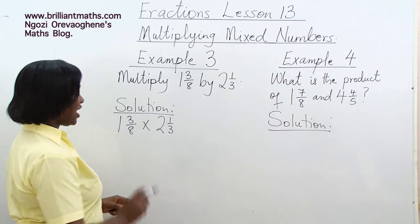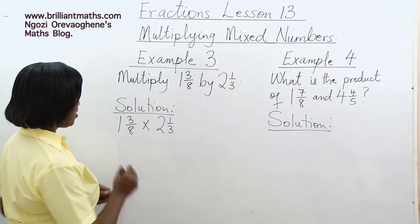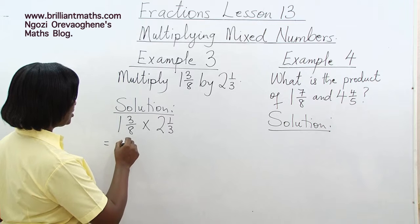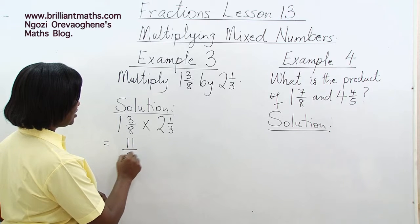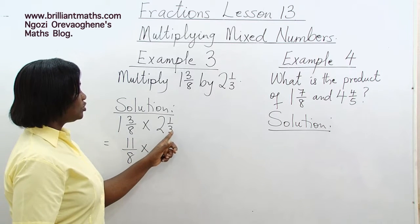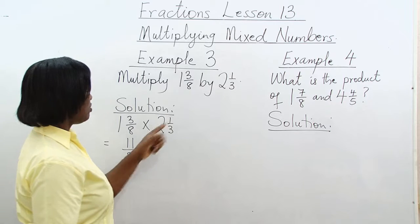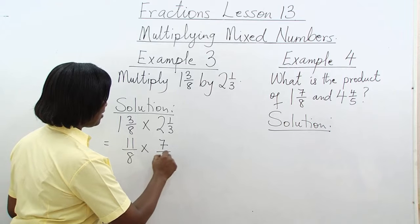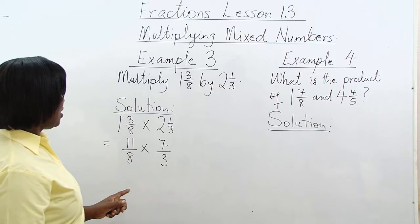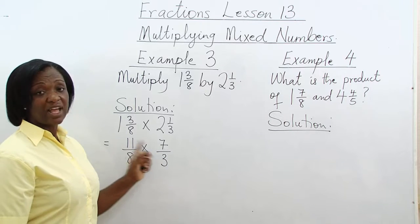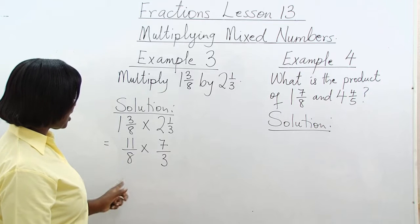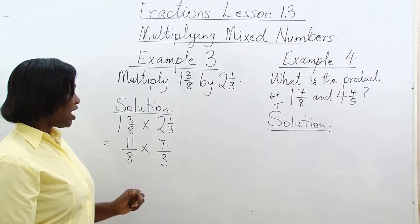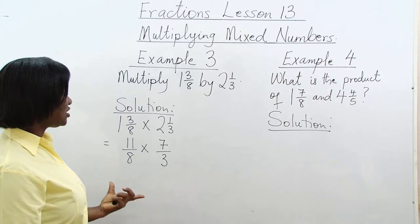8 times 1 is 8, and 8 plus 3 is 11. That would give us 11 over 8 times 2 times 3 is 6, plus 1 is 7. So 2 1 third is 7 over 3. The numerators are 11 and 7, and the denominators are 8 and 3. Obviously, there are no common factors.